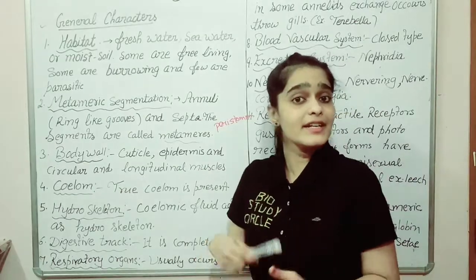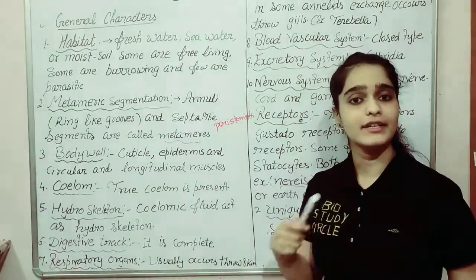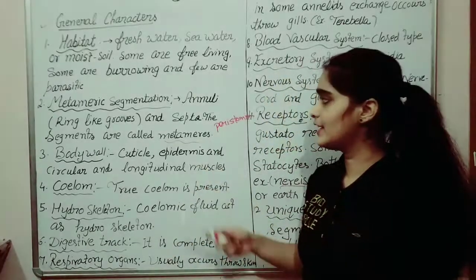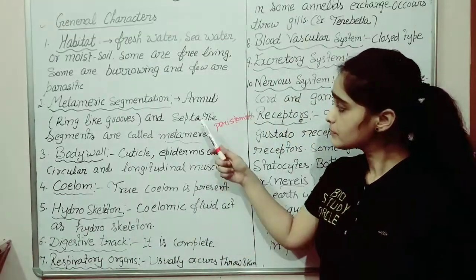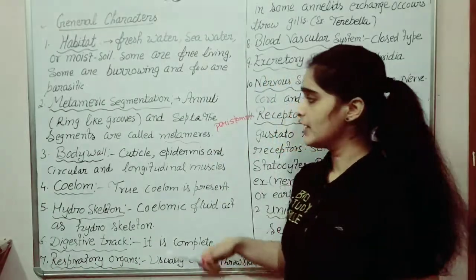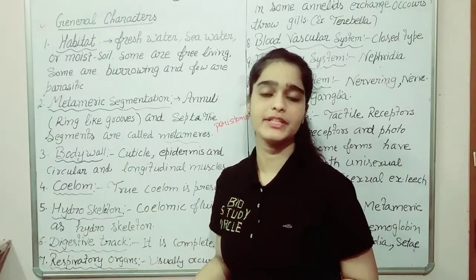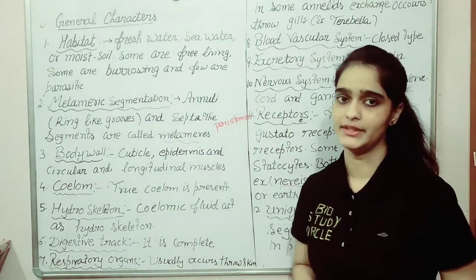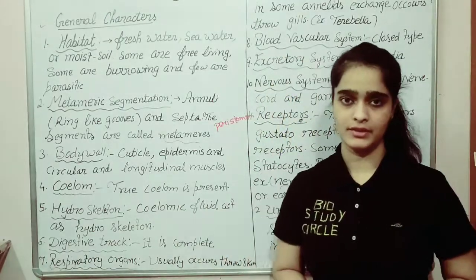The body is externally divided by ring-like grooves, and those grooves are known as annuli. Internally the body is divided by transverse septa. The segments are called metameres.